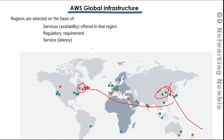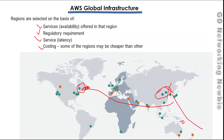The third criteria is latency. To improve user experience we want lower latency, which means selecting regions closer to our users. If users are in Australia, we should deploy services in a region close to Australia. The fourth criteria is cost — some regions may be cheaper than others. If cost is the primary concern, you can check which region provides better rates and select accordingly.